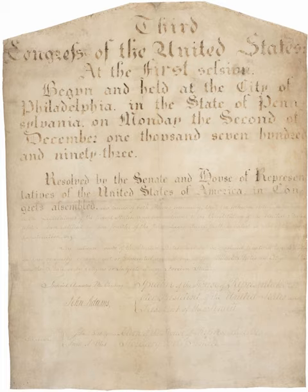The Eleventh Amendment to the United States Constitution, which was passed by Congress on March 4, 1794, and ratified by the states on February 7, 1795, deals with each state's sovereign immunity and was adopted to overrule the U.S. Supreme Court's decision in Chisholm v. Georgia, 2 U.S. 419.